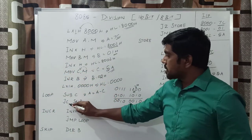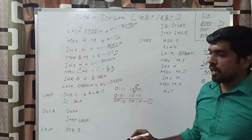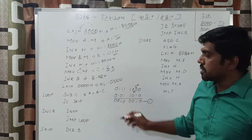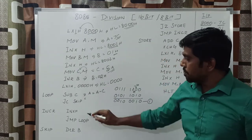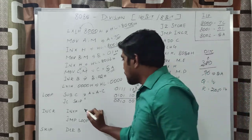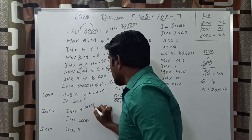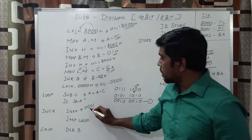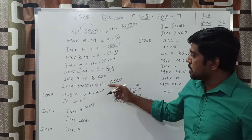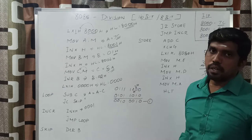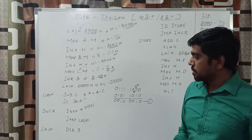Then the next instruction is JC skip. This subtraction does not produce any carry, so the condition is false. It executes the next instruction, INX H. Now the HL pair value increments — before execution, the HL pair value was 0000h; after incrementing, you get the result 0001h. The next instruction is JMP loop — without checking any condition, the program counter moves to the loop label.